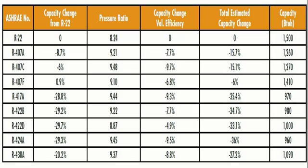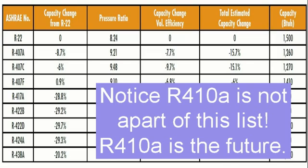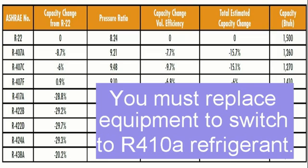The following chart describes the use of an R22 system that has been retrofitted to various refrigerants: R407A, R407C, R407F, R417A, R422B, R422D, R424A, and R438A. Notice the capacity changes from R22 — all of them are negative. The efficiency hits are going to be astronomical; you're going to pay more to run the unit and it's likely going to tear the unit up. There is a lack of volume efficiency because the unit was designed for R22, not any other refrigerant, so the flow rates are going to be different.